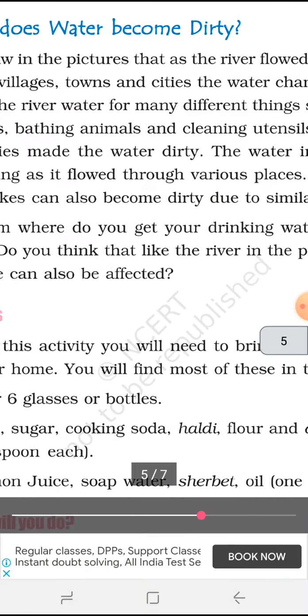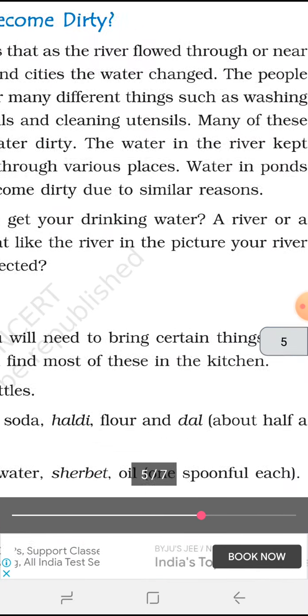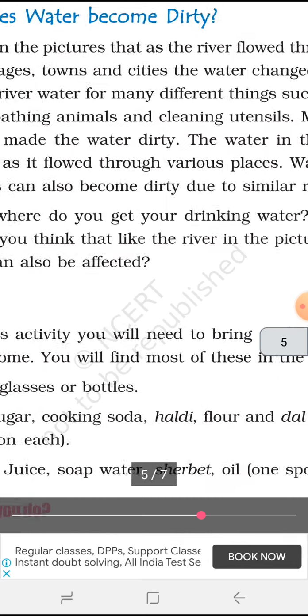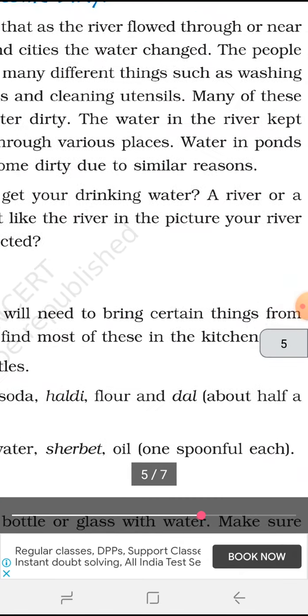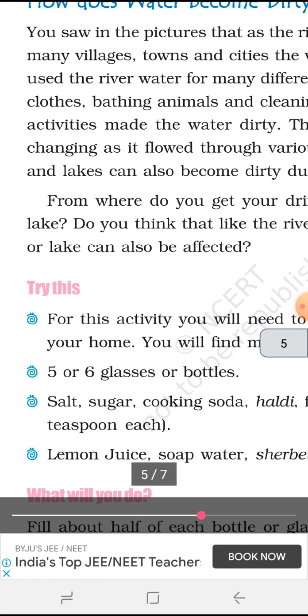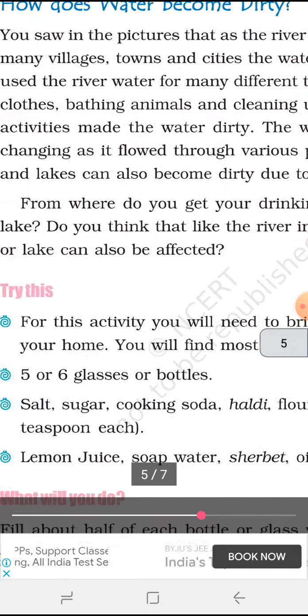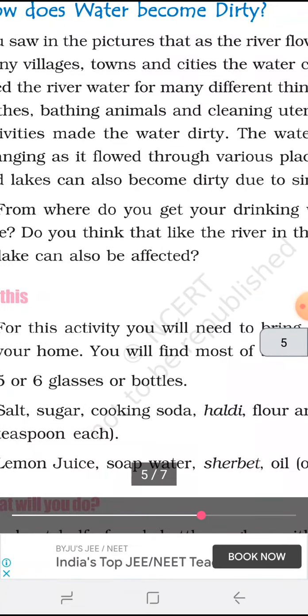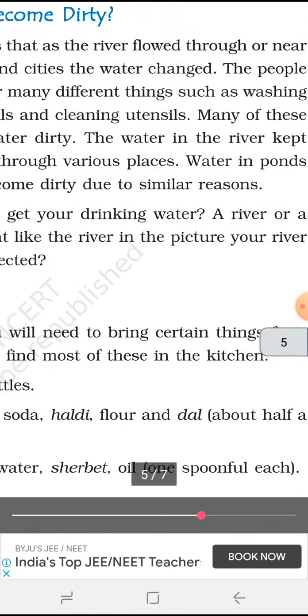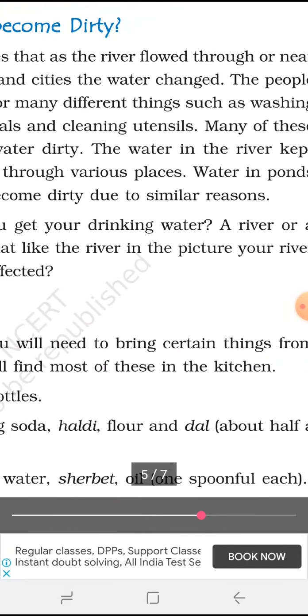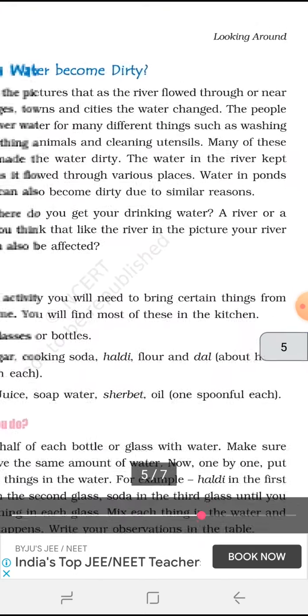People use water in their own way for different purposes such as washing. Someone washes clothes, someone bathes in it, someone bathes their animals, someone cleans their utensils. Many of these activities made the water dirty. And all these activities make the water dirty. The water in the river kept changing as it flows through various places. Water in ponds and lakes can also become dirty due to similar reasons. Ponds and lake water also becomes bad or dirty due to these reasons.